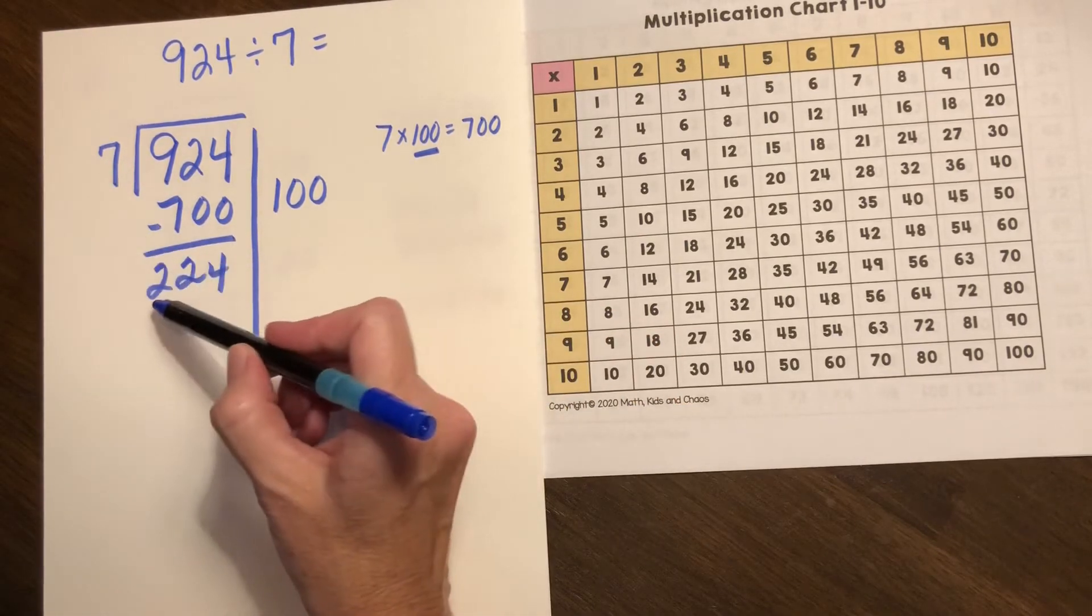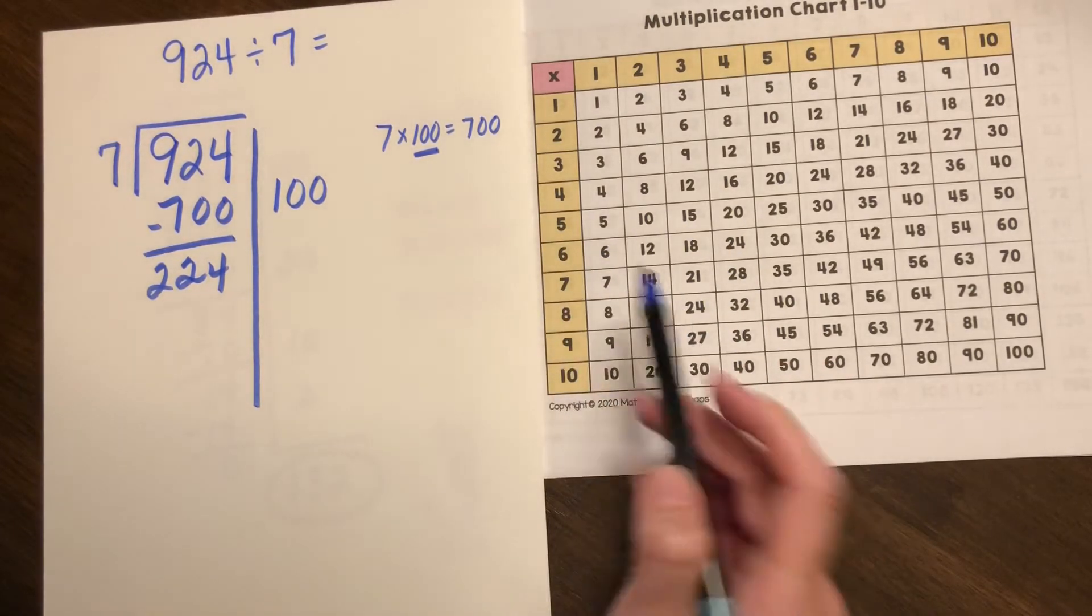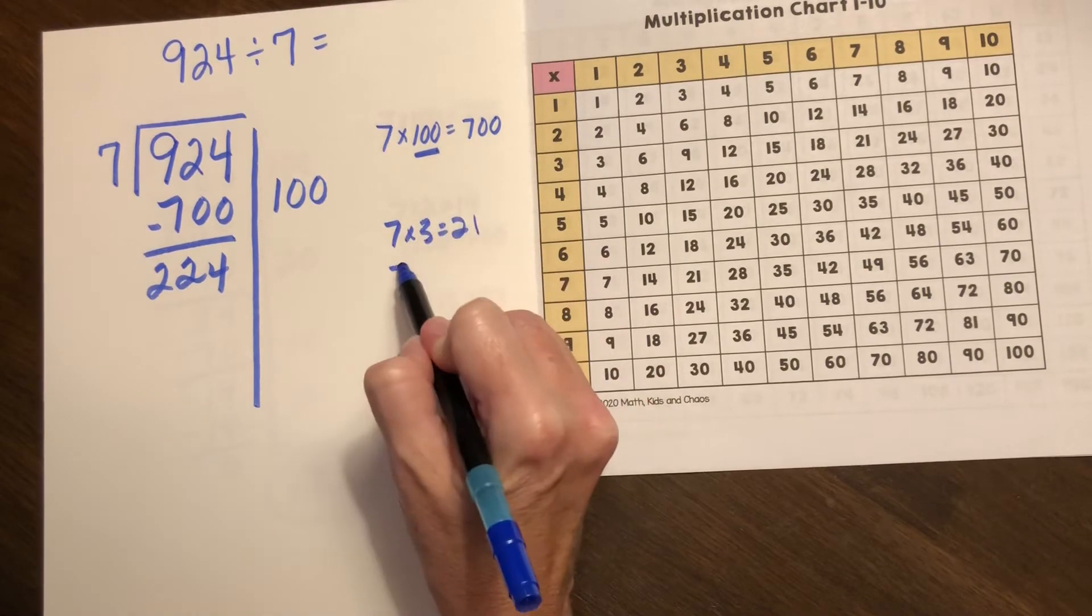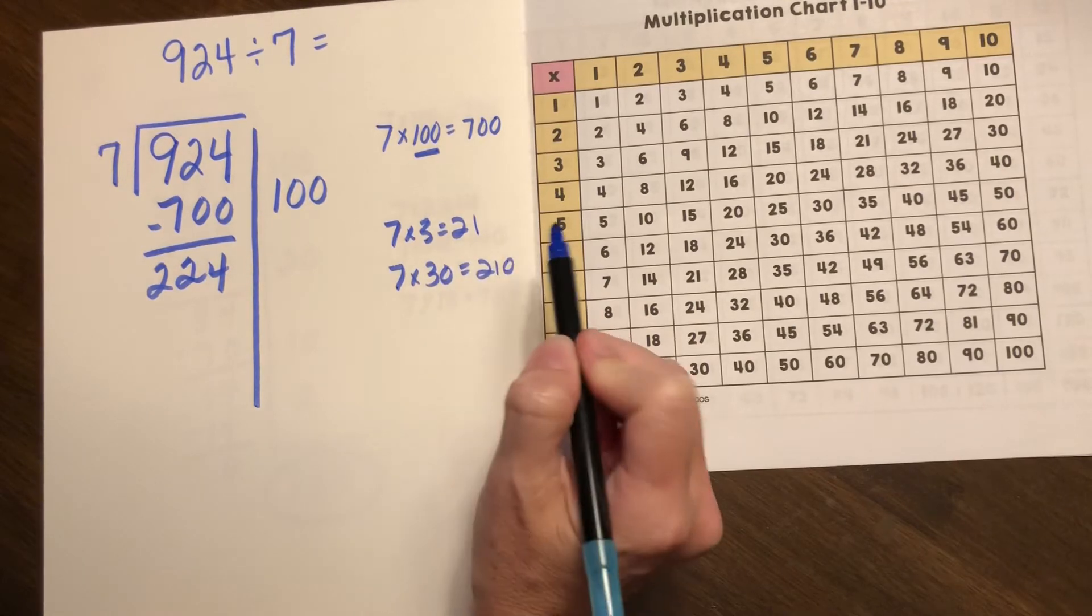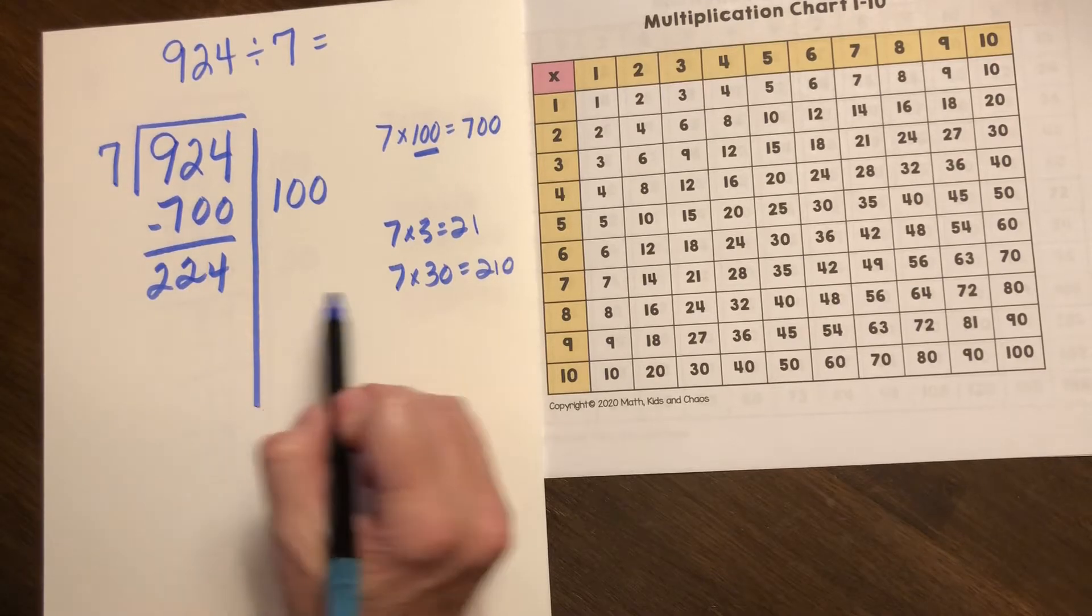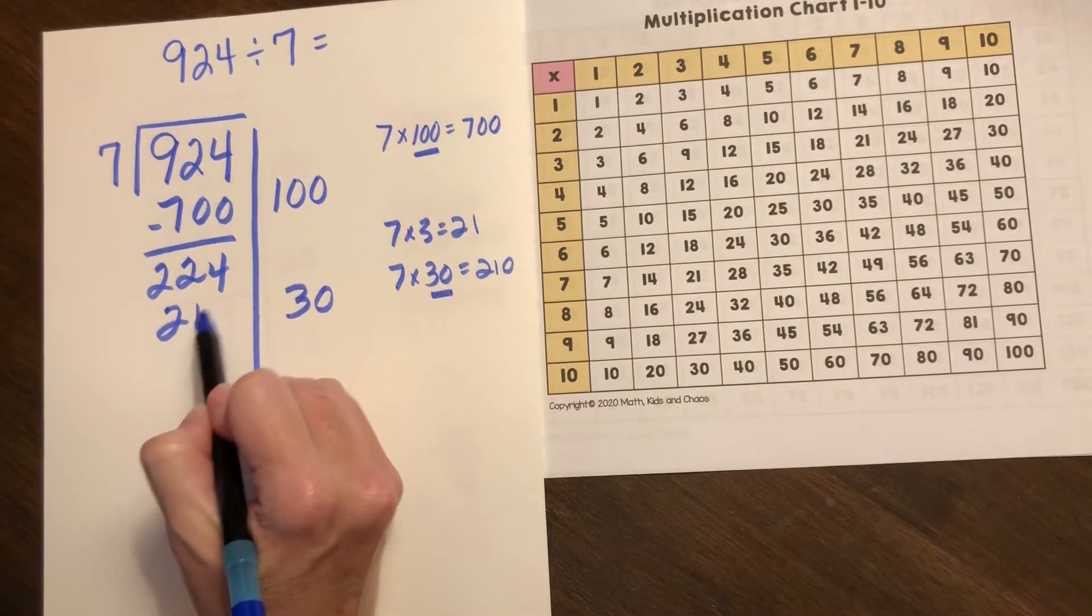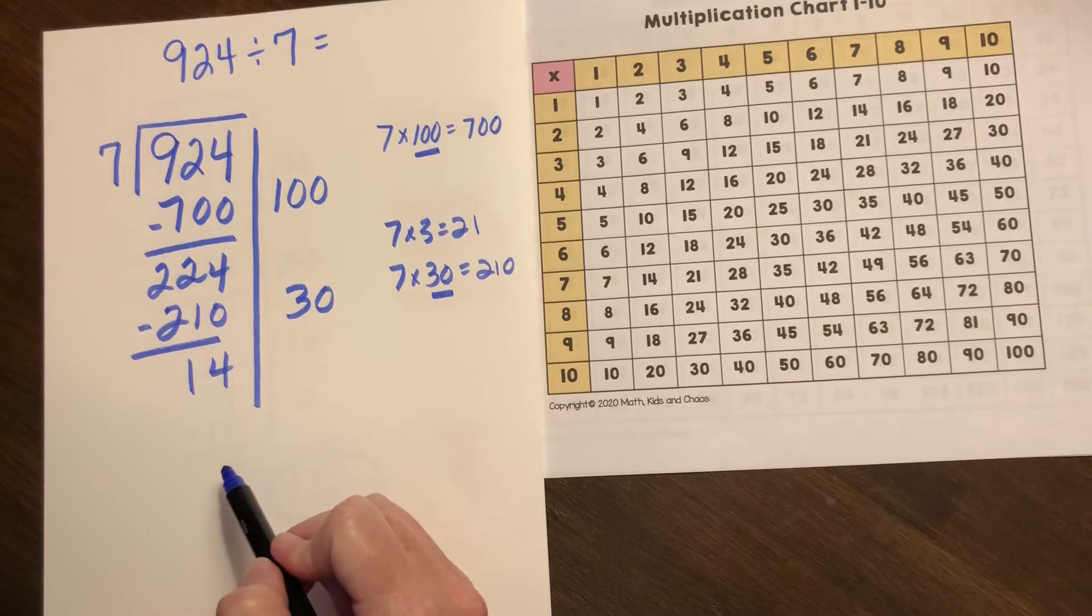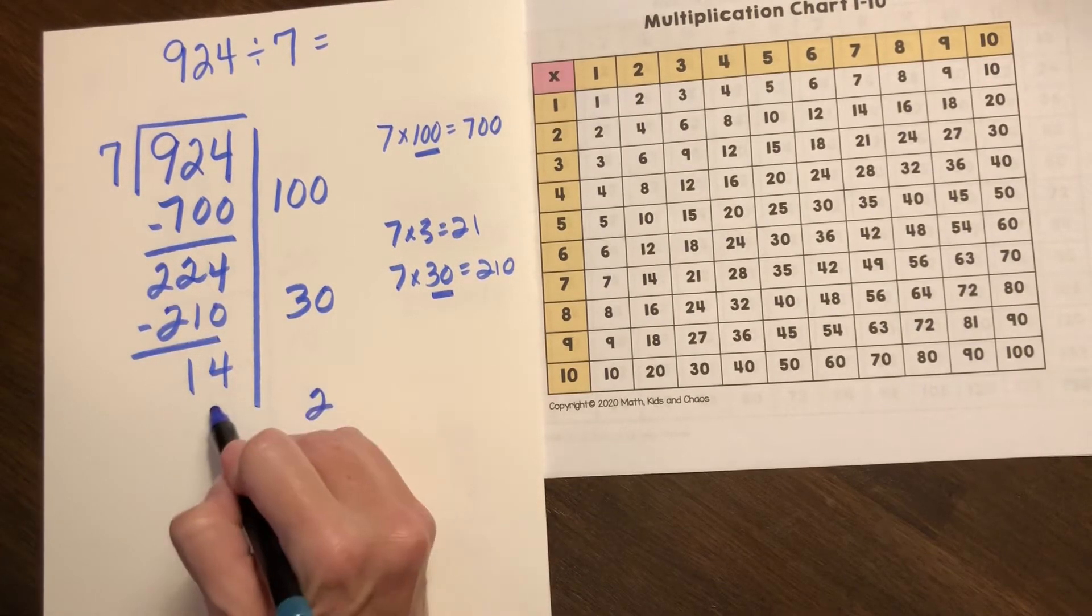So how many times does seven go into two hundred and twenty-four? I know that seven times three is 21, so seven times 30 is 210 and that's a friendly number to get me close to 224. So I know that there's at least 30 more groups of seven that we can create, that leaves us with 14 and we can divide 14 by seven with two more groups.